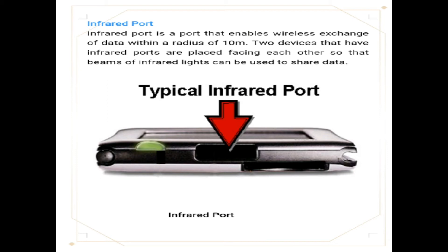Infrared was discovered in the early 1800s by Sir William Herschel. He discovered, upon moving a thermometer across the spectrum of colors, that heat would increase towards red. As he continued to move the thermometer towards the red, the heating continued to rise. This area is what we call infrared, also known as below-red.